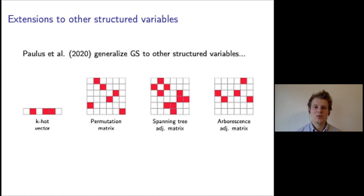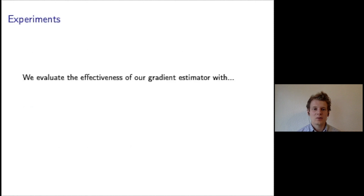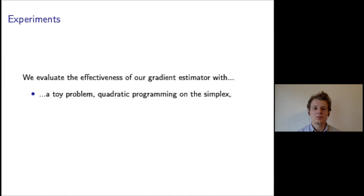Finally, we note recent work that generalizes the Gumbel softmax to other discrete structures, for example k-hot vectors, permutation matrices, or adjacency matrices of graph-based structures. Building on this work, the variance of straight-through estimators could be reduced when efficient reparameterizations of perturbations given the discrete variable are available.